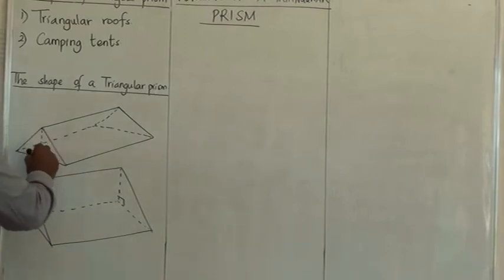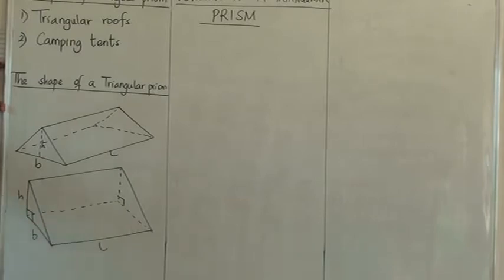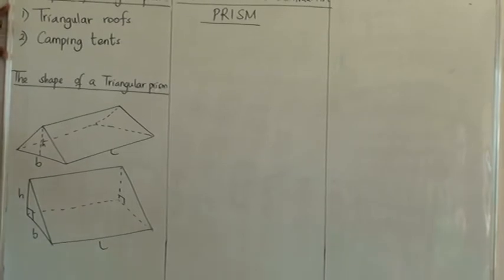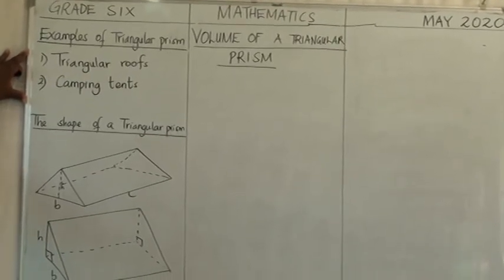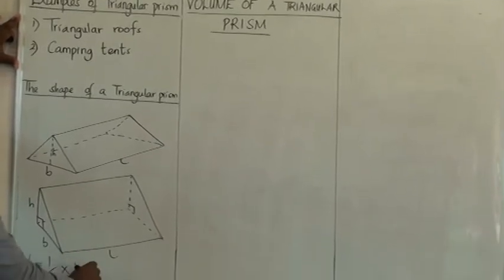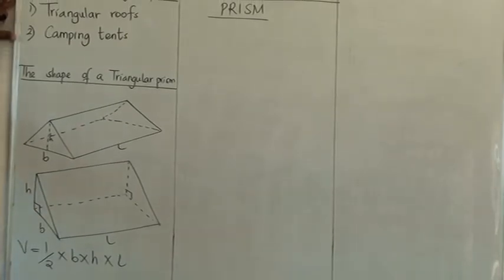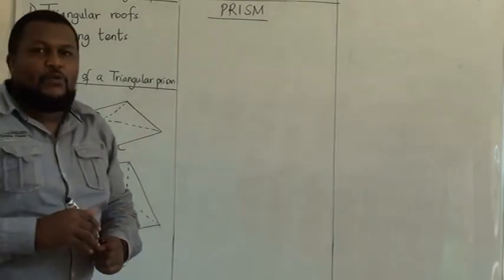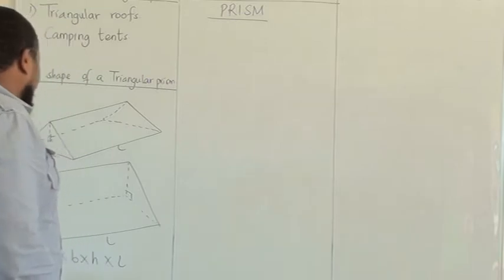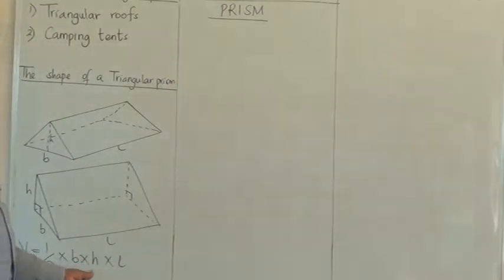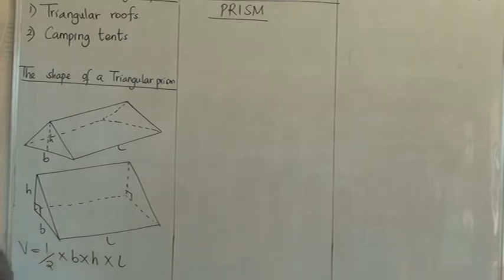Remember, a triangular prism will have a height, a base, and a length. With those dimensions, it will help us to come up with a formula which states that the volume is equal to a half times the base times the height times the length. If you remember very well, we were talking about base area times height. But here we are talking about a half times the base times the height, which makes the area of a triangle times the length. That gives us the total volume of this figure.